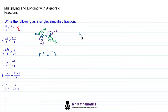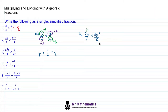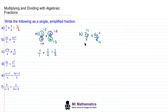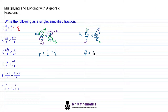Moving on to question B, we have 2y over 5 multiplied by 5y squared over 8. We're going to look for the highest common factor of 2y and 8, which in this case is 2, so we'll divide both by 2. The highest common factor of 5y squared and 5 is 5. So we can rewrite this product as 2y divided by 2, which leaves y; 5 divided by 5 will make 1; 5 divided by 5 again will cancel, leaving y squared; and 8 divided by 2, which is 4. So this simplifies to make y cubed over 4.